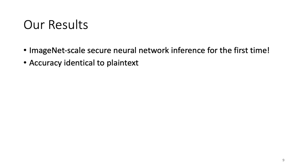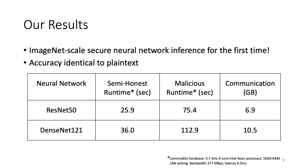With these three components in place, we achieve ImageNet-scale secure neural network inference for the first time, without losing any accuracy compared to plaintext. For example, we benchmark ResNet-50 and DenseNet-121, both working on the ImageNet dataset — ResNet-50 is an ImageNet Challenge winner from 2015, and DenseNet-121 is a CVPR 2017 Best Paper Award winner. In the semi-honest security model, in a LAN setting on commodity hardware, we run both networks in around 35 seconds, while malicious security adds less than a 3x overhead.